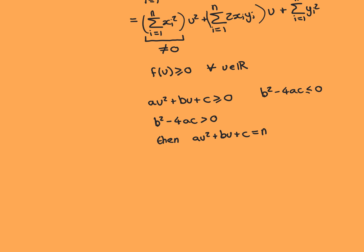For the sake of contradiction, we'll assume the opposite is true: that b² − 4ac is greater than 0, and I will show that contradicts the quadratic being non-negative. I'm going to show that I can find a u such that au² + bu + c equals n, where n is some negative number — n for negative, nothing to do with the n used previously for n-tuples.